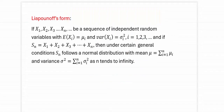The first format of the Central Limit Theorem is referred to as the Lyapunov form. It states that if x1, x2, x3 up to xn are a sequence of independent random variables — meaning one does not affect the other — and each random variable has a mean given by mu_i and a variance given by sigma_i squared.